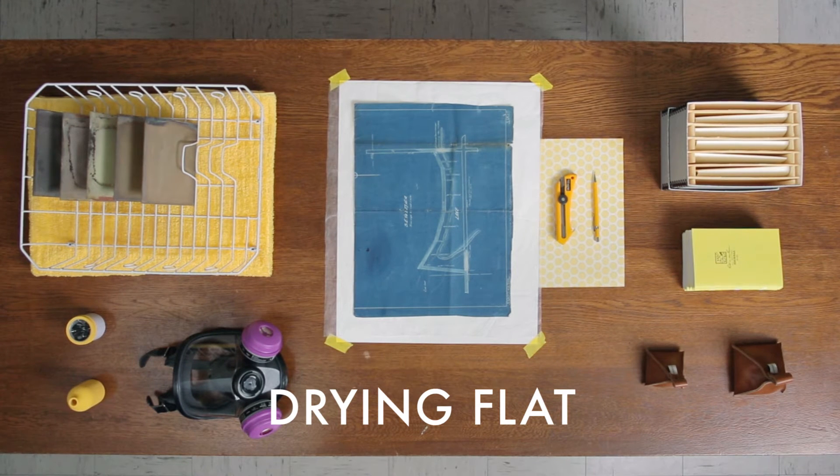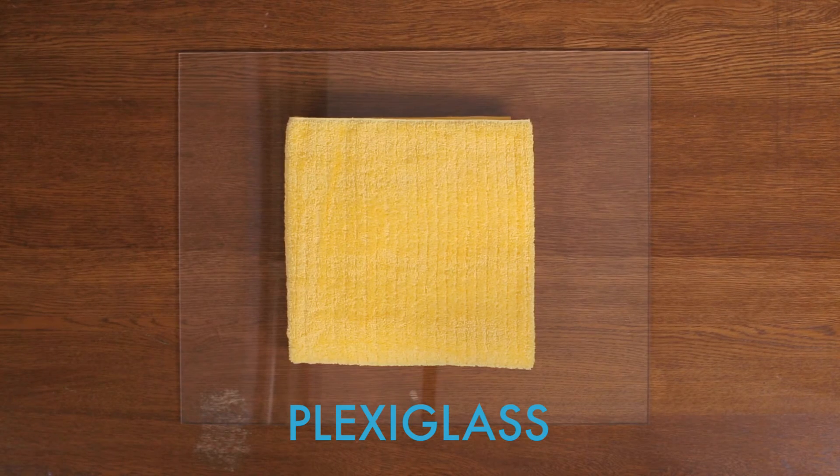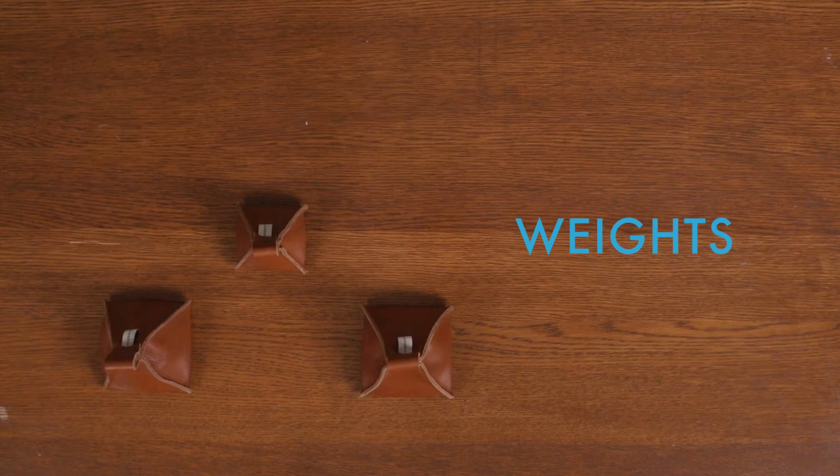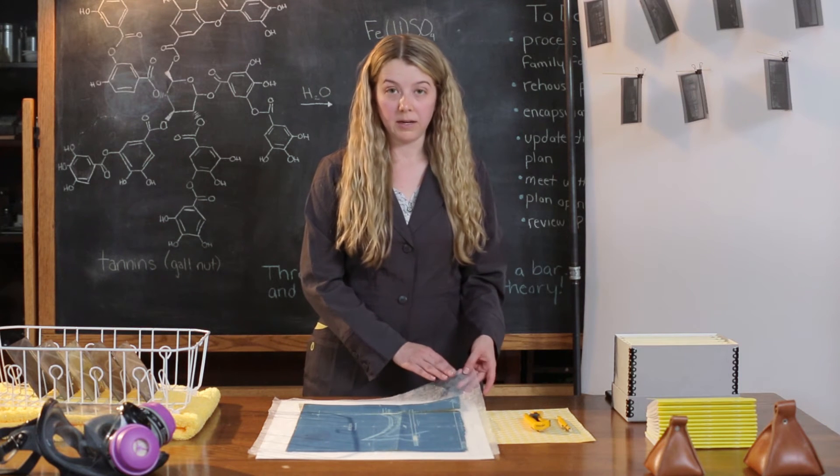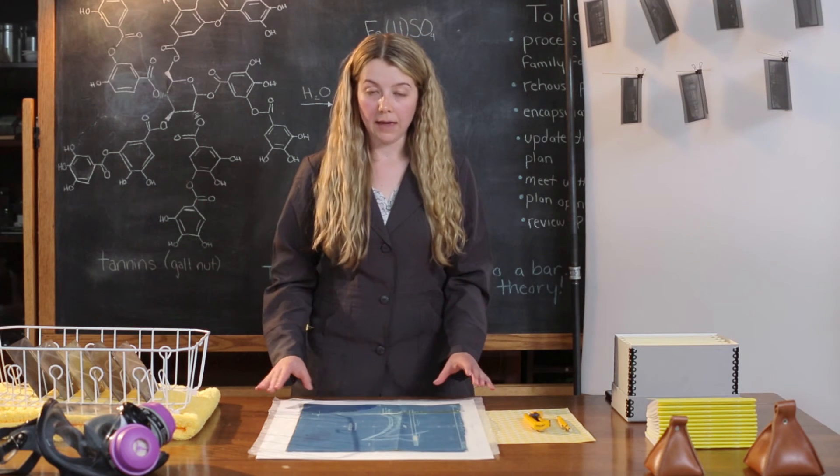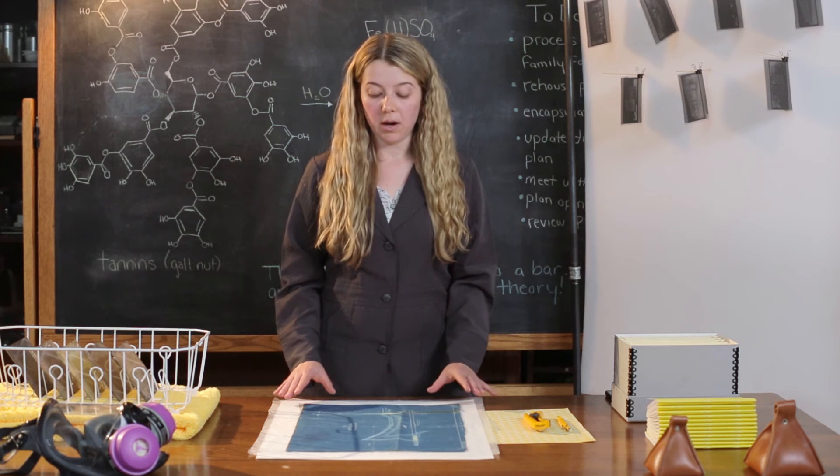For this method, you will need blotting paper, holitex, plexiglass, and weights. First, place a piece of blotting paper on your table, then a piece of holitex, and then your paper record. If your paper record is saturated, stop here.